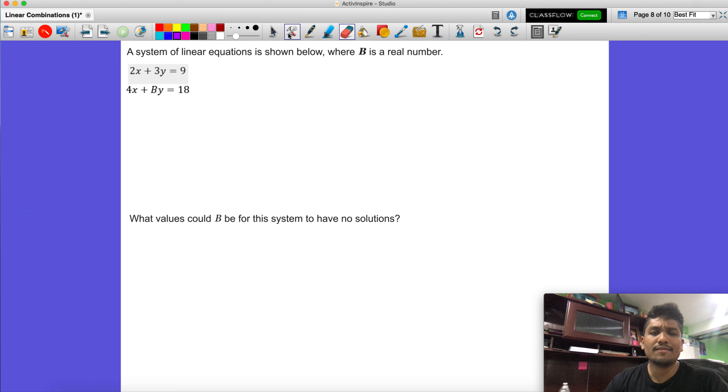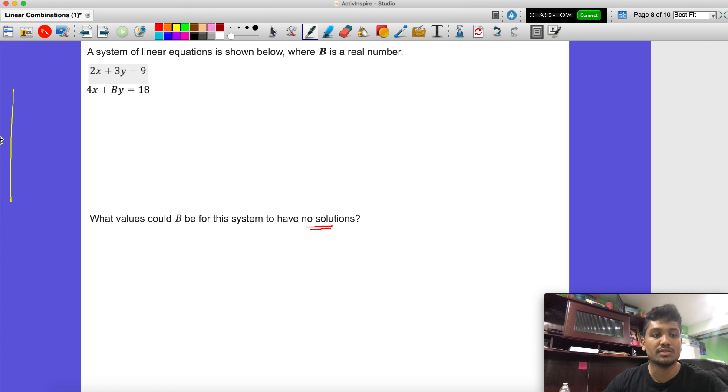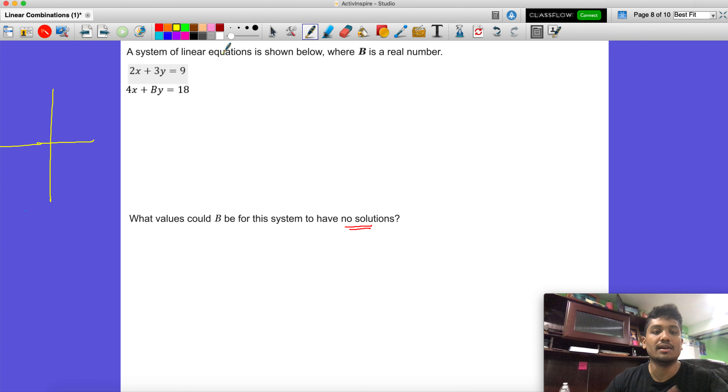Now there's no graphs or anything like that, but if you remember, what characteristics would happen if there were no solutions? Well, if we were to sketch a graph, I'm just going to sketch one here. And you have to think to yourself, what does it mean to have no solutions?